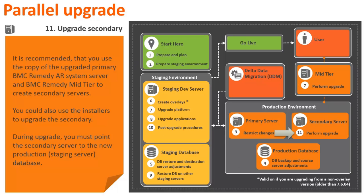In Stage 11, upgrade the secondary servers. It is recommended that you use the copy of the upgraded primary BMC Remedy AR system server and BMC Remedy mid-tier to create the secondary servers. However, if you want, use the installers to upgrade the secondary. During upgrade, you must point the secondary server to the new production database.